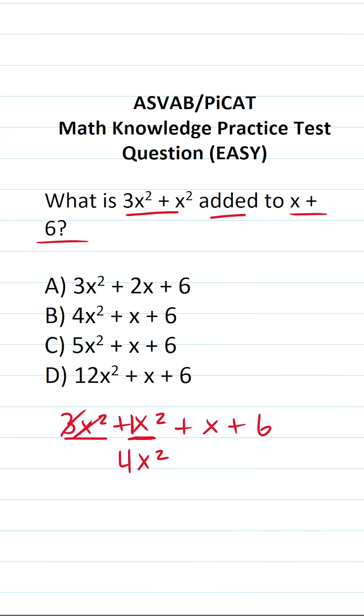Now that we've combined those two terms, we can cross them out. x doesn't have a corresponding like term in this expression, so just bring it down. Likewise, 6 does not have a corresponding like term in this expression, so just bring it down.